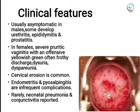Clinically, in males the infection is usually asymptomatic, though some may develop urethritis, epididymitis, or prostatitis. In females it is symptomatic, presenting with severe pruritic vaginitis, offensive yellowish-green frothy discharge, dysuria, and dyspareunia. Cervical erosion is common; endometritis and piosalpingitis are infrequent complications. In neonates, pneumonia and conjunctivitis are rarely reported.